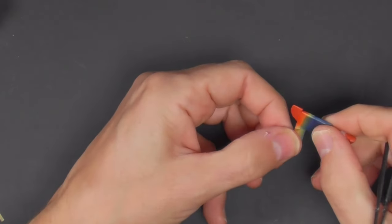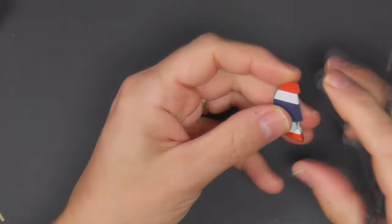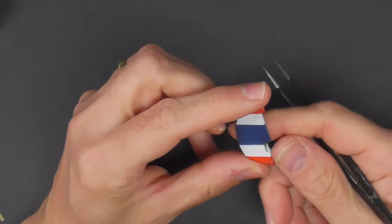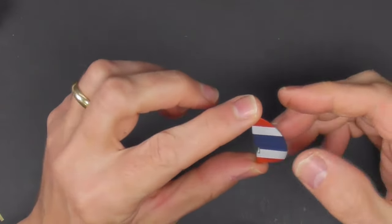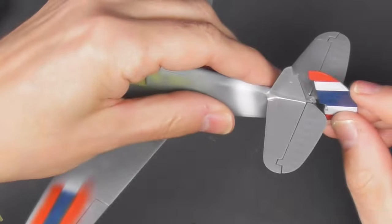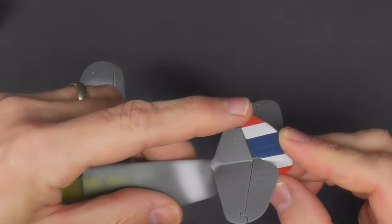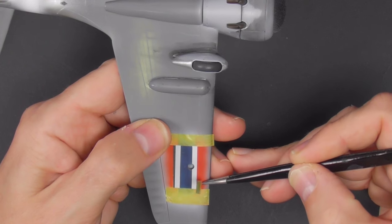This is always fun—removing the masking. A decal is supplied but it is too big for the rudder. Actually, that's probably done on purpose, but spraying it is a relatively simple job.